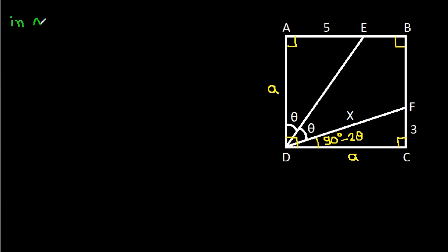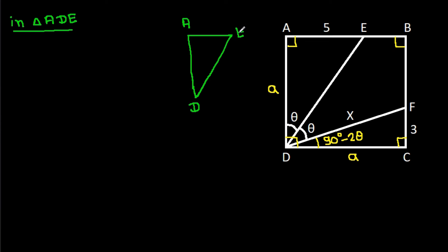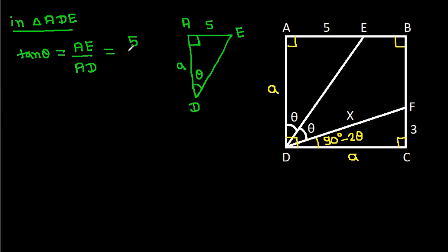Now, in triangle ADE: angle A is 90 degrees, angle ADE is theta, AD is A, and AE is 5. So tan theta equals AE over AD, which is 5 over A.